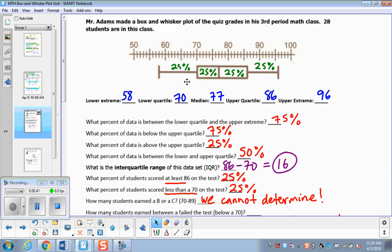All right, for the first question, we want to know what percent of the data is between the lower quartile and the upper extreme. So between the lower quartile and the upper extreme is that part, so 75 percent of the data. All right, what percent of the data is below the upper quartile? So if this is the upper quartile, we want to know what percent of the data is below that, so once again, seventy-five percent.